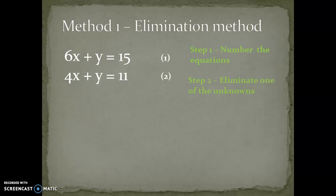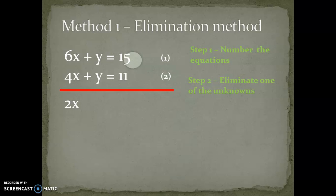The second step is to eliminate one of the unknowns by subtracting or adding the equations. For this equation we subtract: 6x minus 4x equals 2x, y minus y equals 0, and 15 minus 11 equals 4. Step 3: work out the unknown. As we can see, 2x equals 4, so x equals 2.